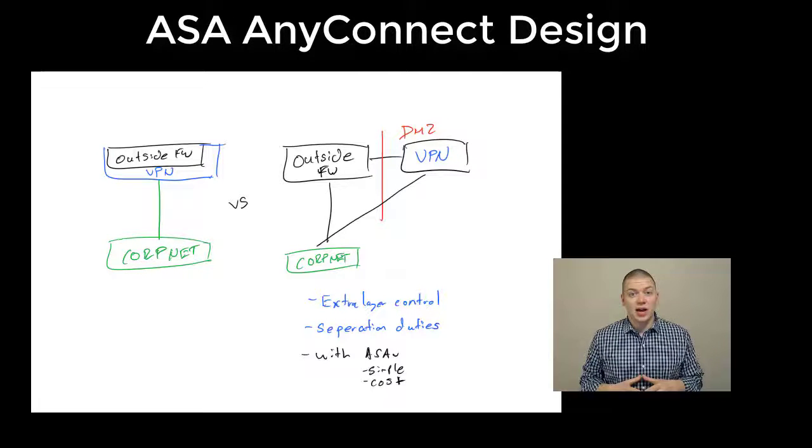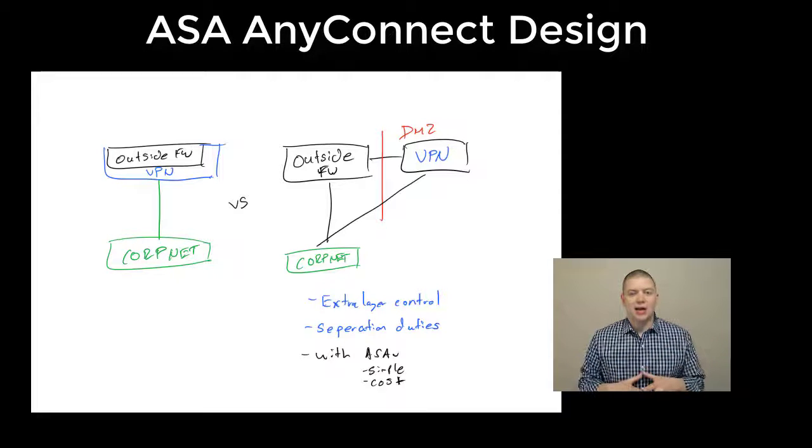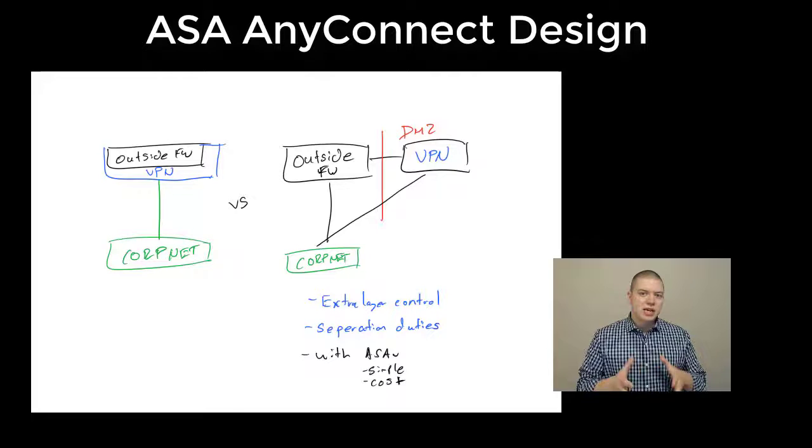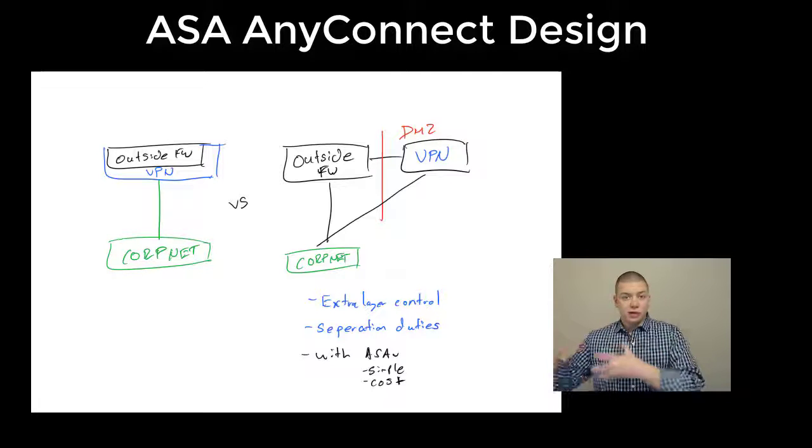I want to do a quick video post for you guys on ASA AnyConnect design. Many of my customers come to me and say, Tim, do we keep our AnyConnect clients terminating to our same perimeter firewall, or do we break those out to a separate layer?